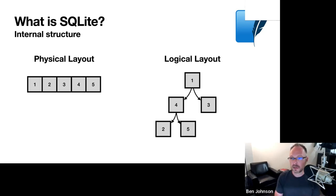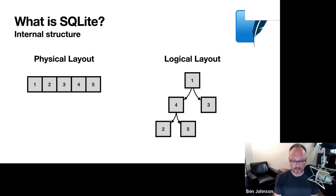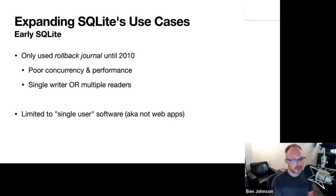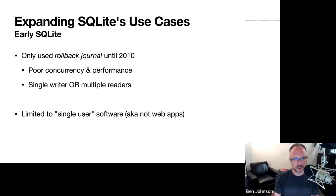LiteStream is a physical replication layer — we just care about pages, not about your rows and schemas. SQLite originally started in 2000 and for the first 10 years used a transaction mechanism called the rollback journal. If you want to make a change transactionally, you copy the old version of the page to a rollback journal file, then make changes in the database. If anything fails, you copy back from the journal. The problem is bad concurrency — you get either a single writer or multiple readers, limiting it to single-user software.